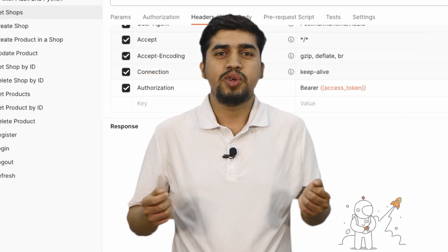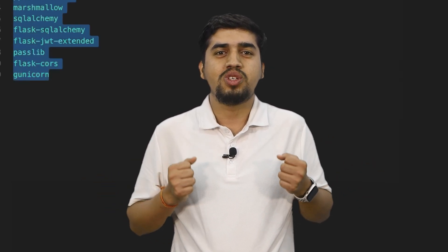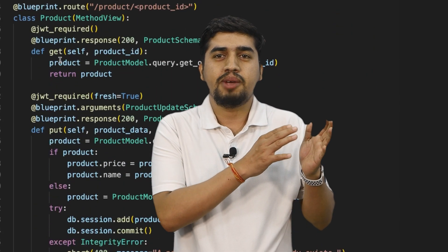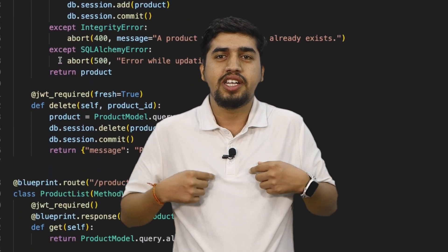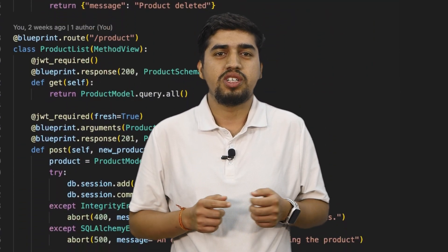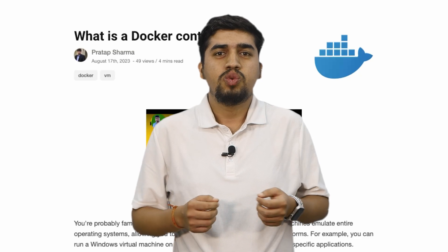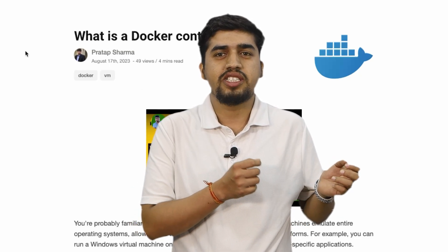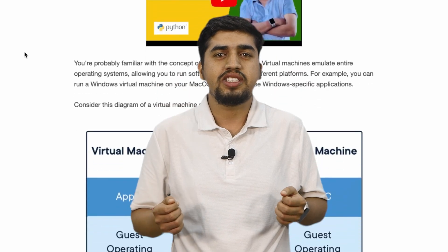Let me give you an overview of what we'll cover in this course. I believe the most effective way to learn is by building a project, so we'll progressively construct a REST API project. We'll begin by creating a basic API and I'll guide you to run it using Docker. Next, we'll incorporate Flask-SmoRest, a Flask extension that simplifies building REST APIs.